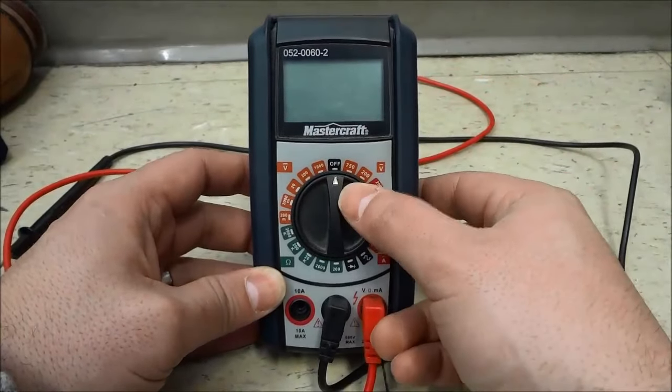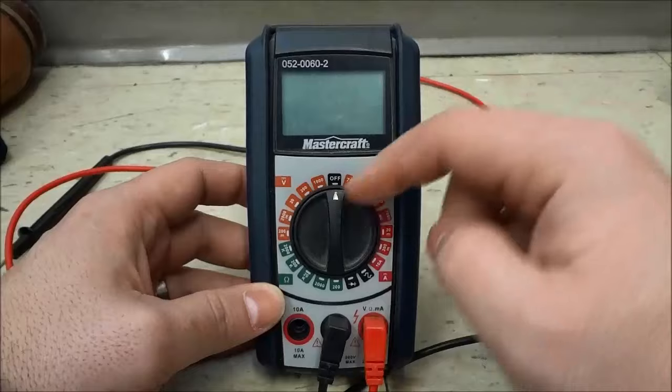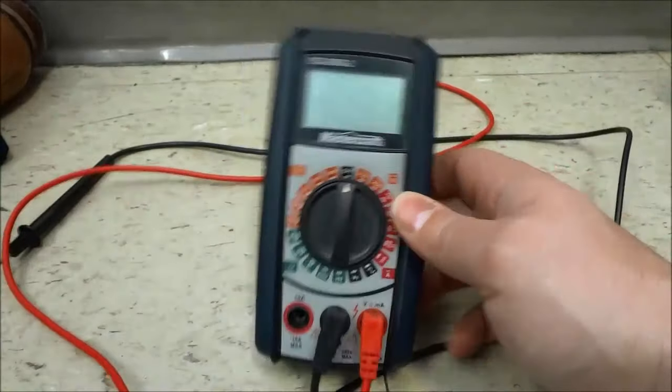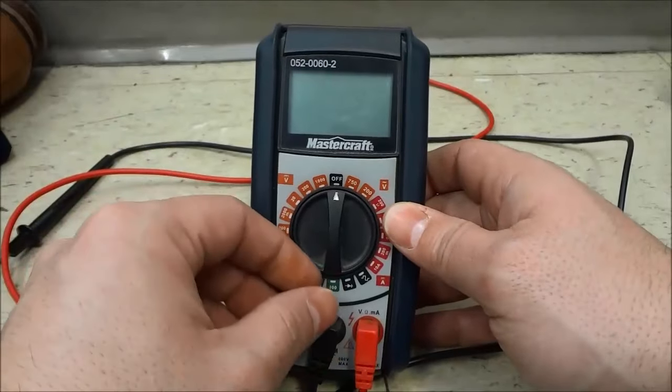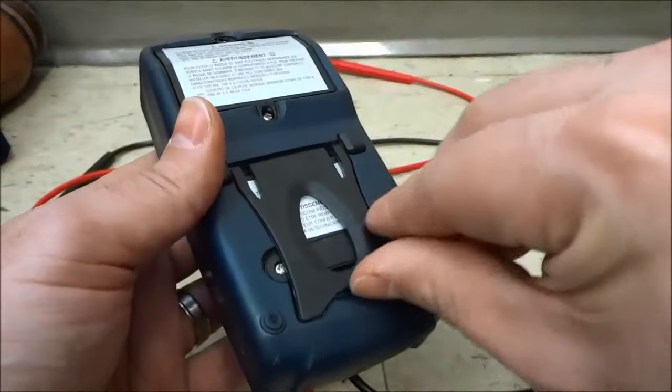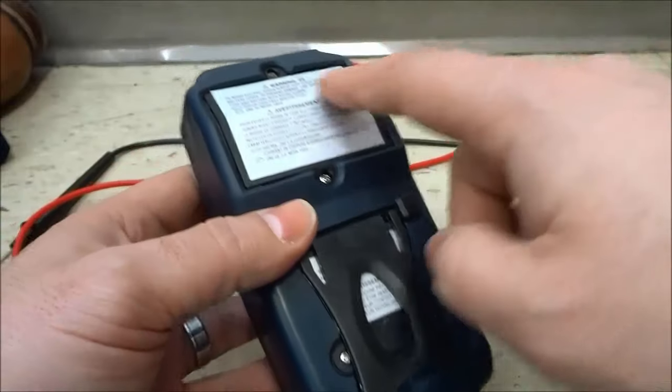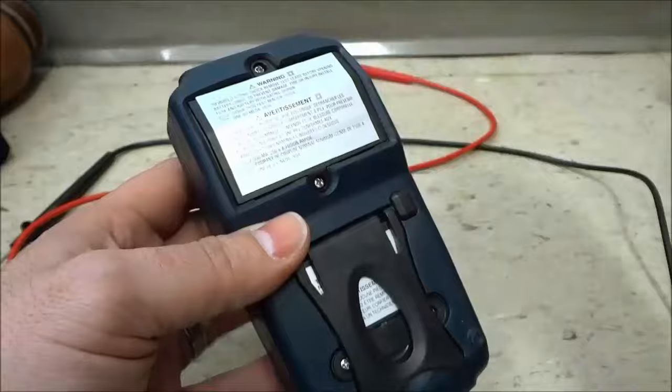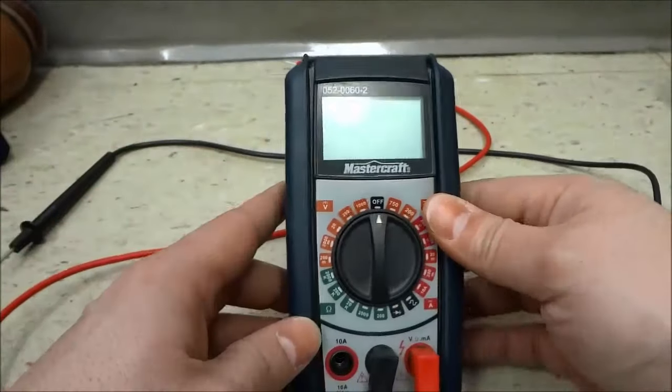You can see the off section right there. That will turn the multimeter off and not waste any battery. It uses a 9-volt battery. To access the battery, you simply unscrew this little panel and replace the 9-volt battery.